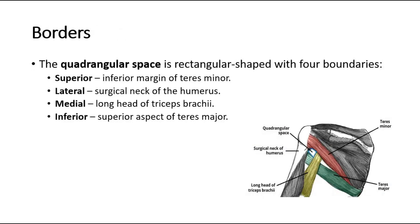The quadrangular space is rectangular shaped with four boundaries. The superior border is the inferior margin of teres minor. The lateral border is the surgical neck of the humerus. The medial border is the long head of triceps brachii. The inferior border is the superior aspect of teres major.